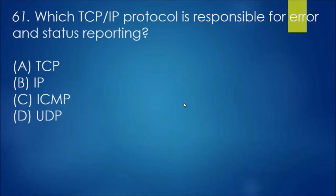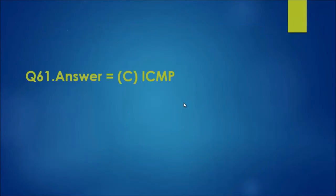Question 61: Which TCP IP protocol is responsible for error and status reporting? TCP and IP represent a protocol, so it can't be those. UDP is just a delivery mechanism, so that leaves us with C, ICMP, which is basically responsible for reporting any errors and runs the network layer.